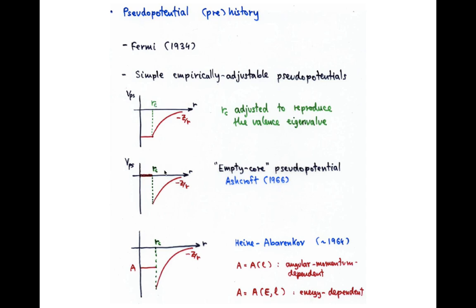in some cases just one parameter, in Heine and Abarenkov's model a few more, but there are the basic form of a core region where things are softer and then the Coulomb tail of the pseudopotential.